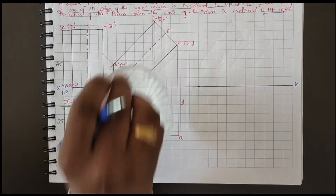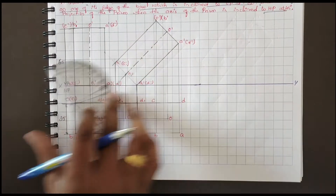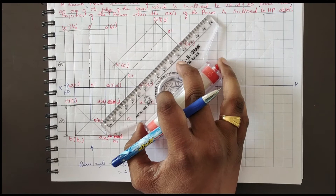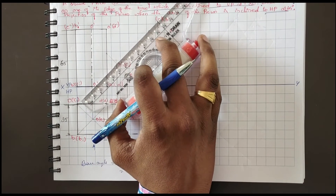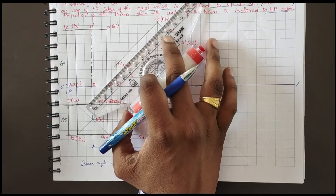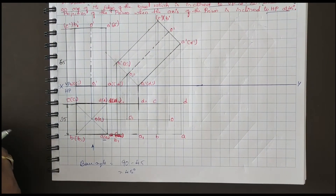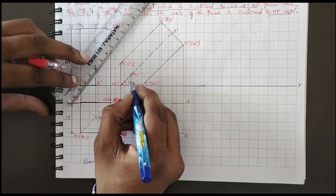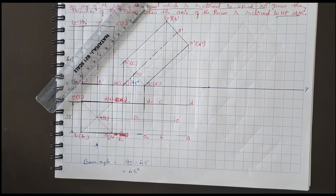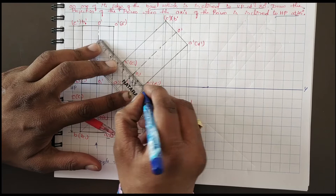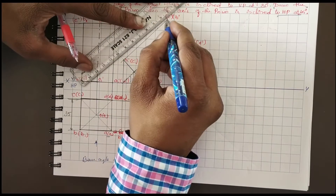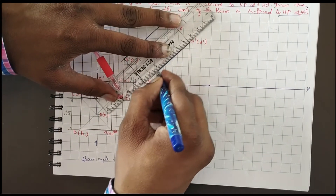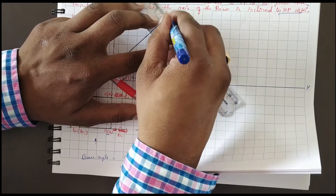From one point, you take 90 degrees; from one point, you take 90 degrees. After that, use a roller scale — you just roll like this, one and then two. Then extend this line up to the XY line, then show the angle: 45 degrees. These are the visible lines, so I will make them visible.